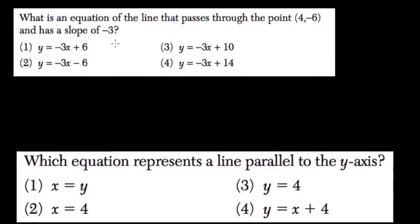We need an equation of a line that passes through the point (4, -6) and has a slope of -3. The fastest way to do this is to plug this point into the choices they give you.